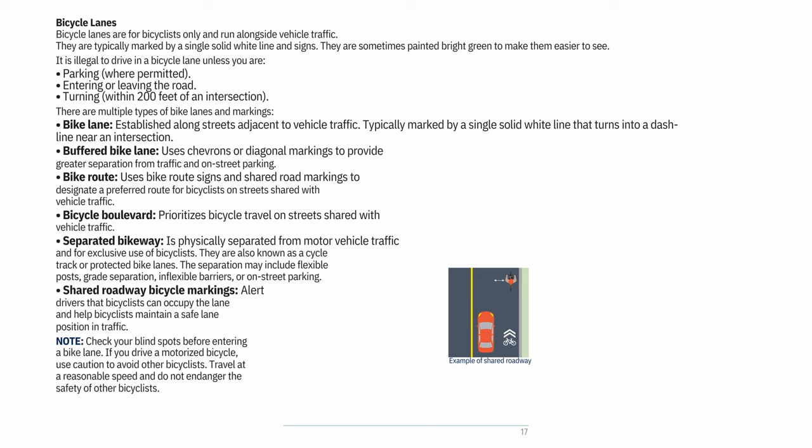It is illegal to drive in a bicycle lane unless you are parking where permitted, entering or leaving the road, or turning within 200 feet of an intersection. Types of bike lanes include: bike lane (adjacent to vehicle traffic, marked by a solid white line that turns into a dashed line near intersections), buffered bike lane (uses chevrons or diagonal markings for greater separation), bike route (uses signs and shared road markings for a preferred bicyclist route), and bicycle boulevard (prioritizes bicycle travel on streets shared with vehicles).